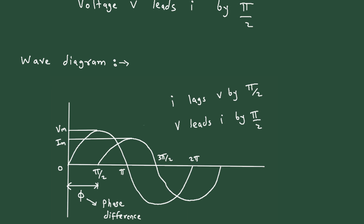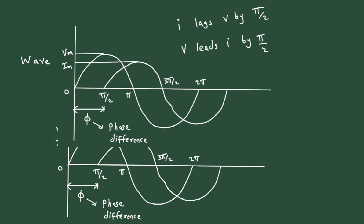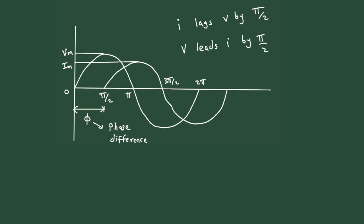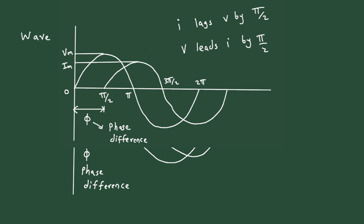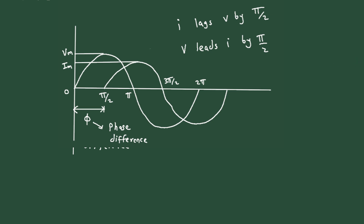This is the voltage waveform and this is the current waveform. Voltage V leads I by π/2, or equivalently, I lags V by π/2. Here Vm is the maximum or peak value of voltage and Im is the maximum or peak value of current.